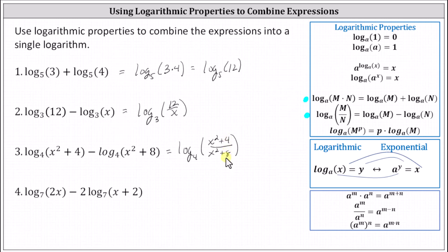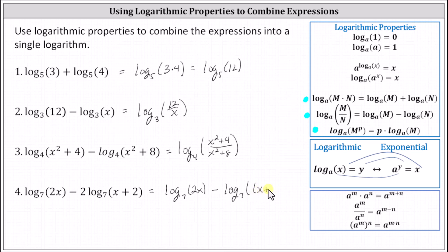Number four is a little bit different. We have log base seven of two x minus two log base seven of the quantity x plus two. We cannot apply the quotient property of logs because of the two in front of log base seven of the quantity x plus two. We first need to apply the power property of logarithms, which is: p times log base a of m equals log base a of m to the power of p. So we write the difference as log base seven of two x minus log base seven of the quantity x plus two squared. Now in this form, we can apply the quotient property of logarithms, giving us log base seven of the quotient of two x and the square of x plus two. The quotient does not simplify.